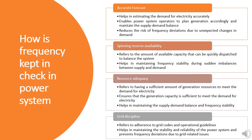In the world of power systems, maintaining stability and reliability is critical for ensuring a consistent and uninterrupted supply of electricity. To maintain the frequency of a power system within its operating limit, several measures can be implemented. Accurate forecasting plays a critical role in power system stability — by estimating the demand for electricity accurately, power system operators can plan generation accordingly and maintain the supply-demand balance. Accurate forecasting reduces the risk of frequency deviations due to unexpected changes in demand, enabling the system to operate smoothly and efficiently.